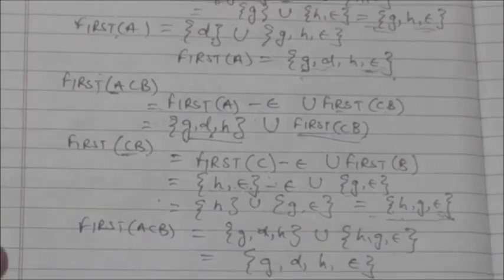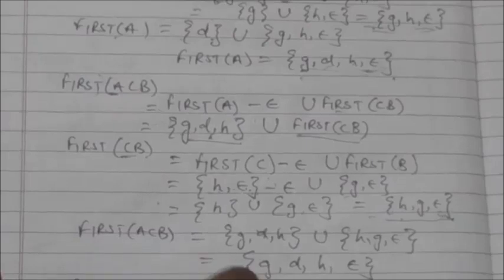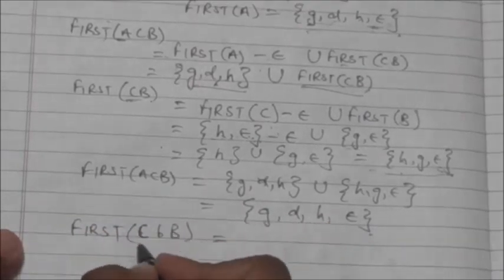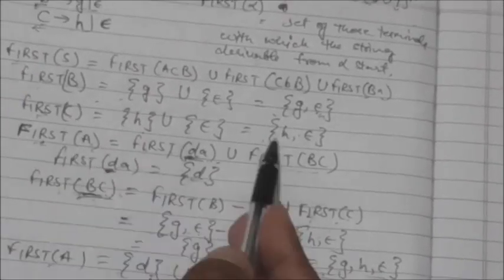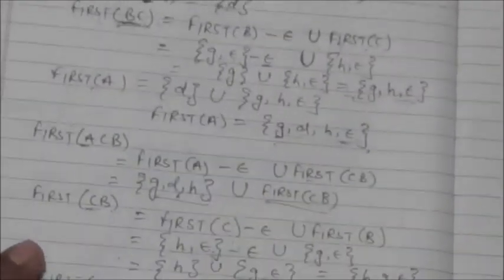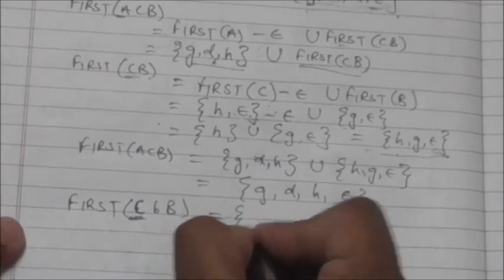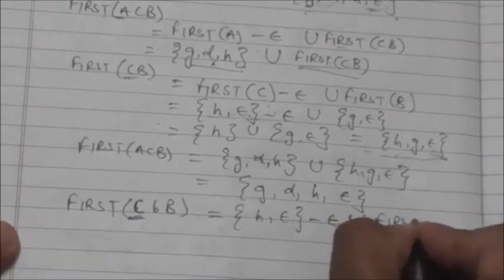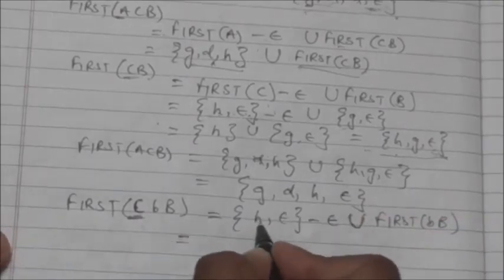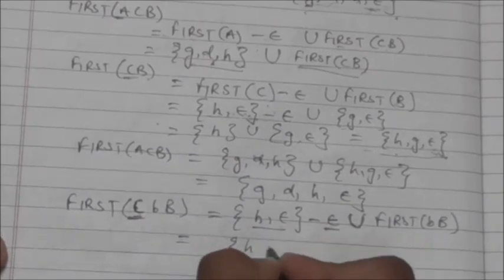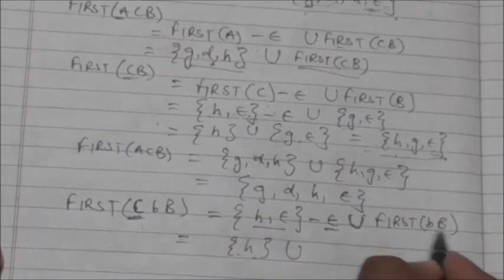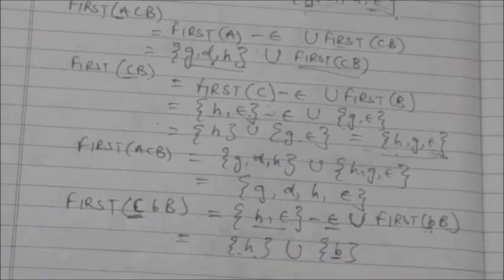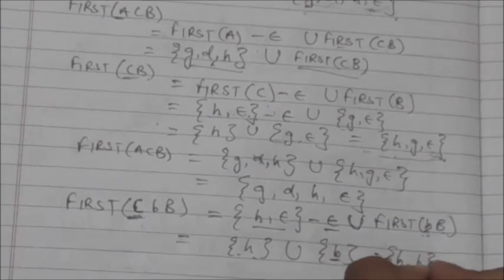Now we find FIRST of CBB. Since FIRST of C contains empty, FIRST of CBB = (FIRST of C minus {empty}) union FIRST of bB. Since small b is a terminal, FIRST of bB = {b}. So FIRST of CBB = {h} union {b} = {h, b}.